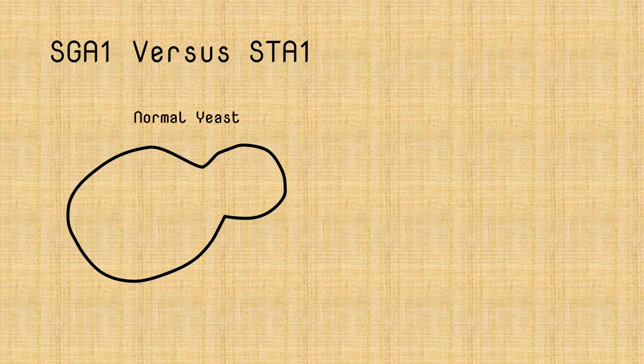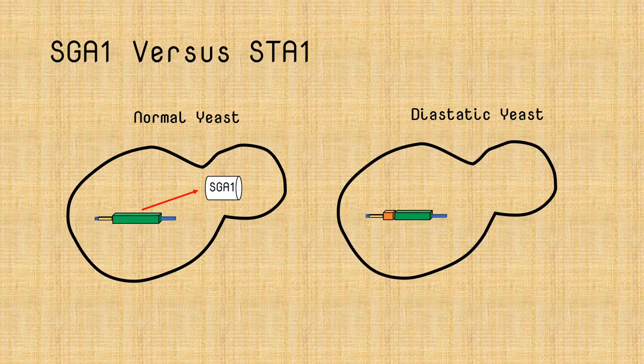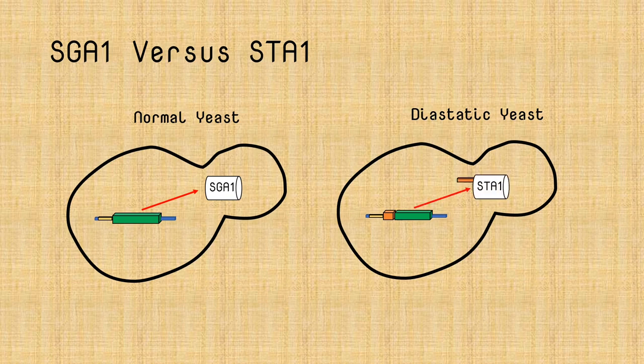So functionally, these proteins are similar but different. Normal yeast of course have the SGA1 gene, which when expressed stays inside of the cell and breaks down glycogen. Diastatic yeast have the SGA1 gene, but it is attached to the signal peptide from FLO11. And so when it's expressed, this protein is recognized by the cell and exported out into the environment.